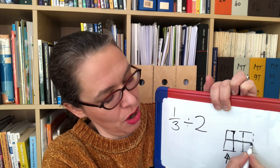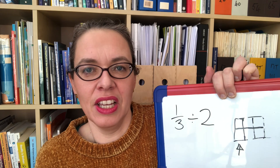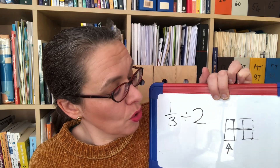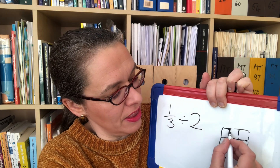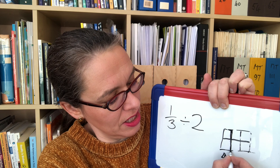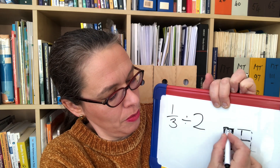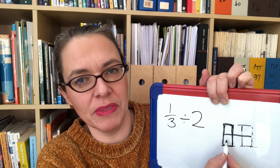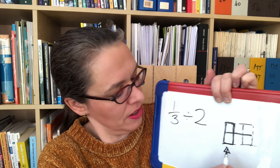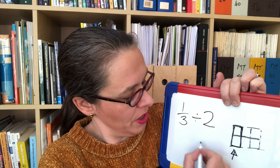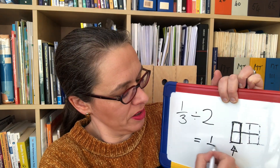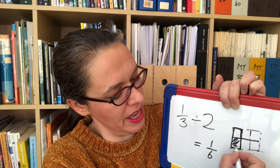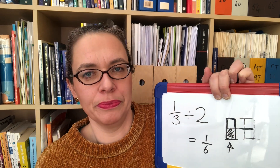I'm going to cut it horizontally, because it just requires one line. You can also see that this third, when it's split fairly into two parts, becomes one sixth. Therefore, the answer is one sixth — this part here has come from the whole third.